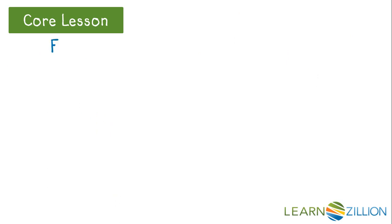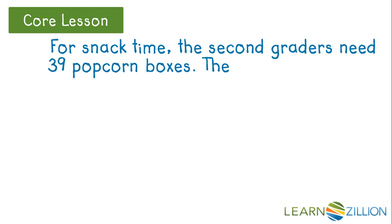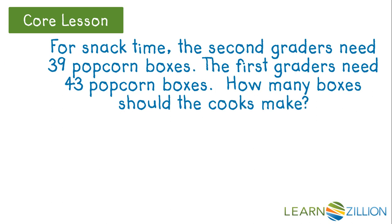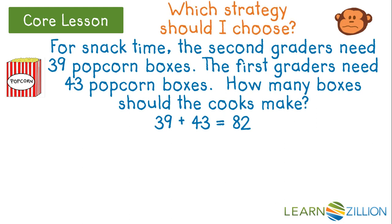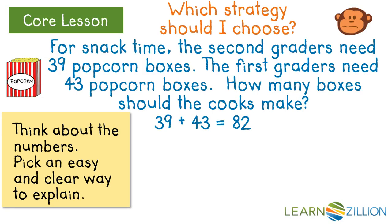Let's look at one other example. For snack time, the second graders need 39 popcorn boxes. The first graders need 43 popcorn boxes. How many boxes should the cook make? The monkey has an answer of 82 for this problem. Again, he needs to think about the numbers in the problem and pick an easy and clear way to explain.